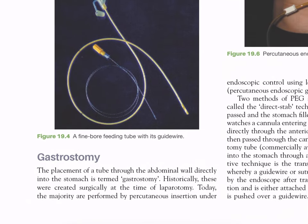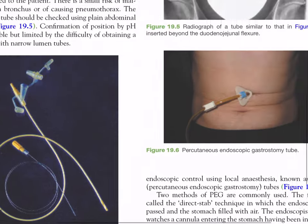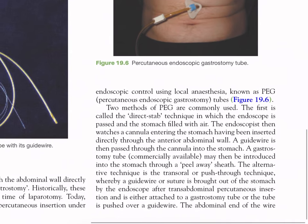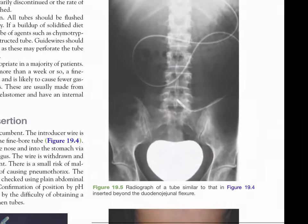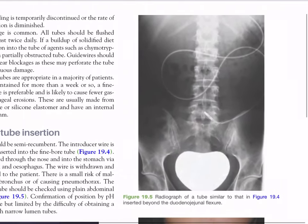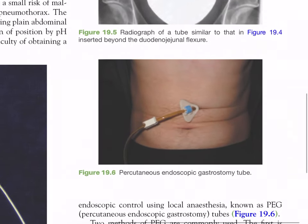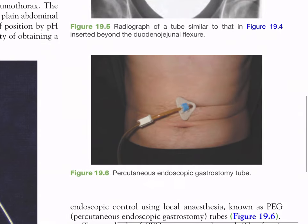Gastrostomy: placement of a tube through the abdominal wall directly into the stomach is termed gastrostomy. Historically these were created surgically at laparotomy; today the majority are performed by percutaneous insertion under endoscopic control using local anesthesia — known as percutaneous endoscopic gastrostomy (PEG). Figure 19.5 shows a radiograph of a tube inserted beyond the duodenojejunal flexure. Figure 19.6 shows a percutaneous endoscopic gastrostomy tube.